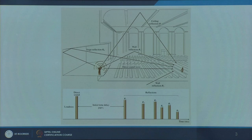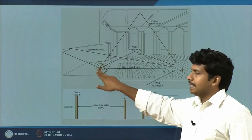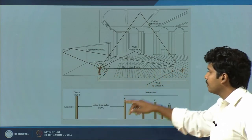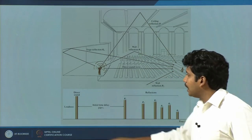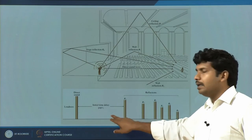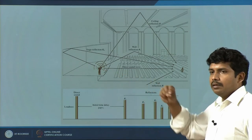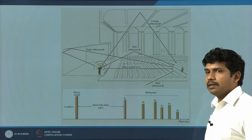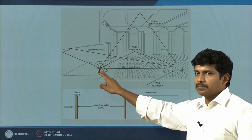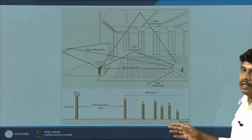We were talking about sound transmission. You have an auditorium stage area and the listener here. You have a direct sound wave. You have an initial time delay gap which is called ITD or initial time delay gap. If you are closer, you listen in say 1 millisecond, 2 millisecond, or 5 millisecond. As you go further, this distance increases.